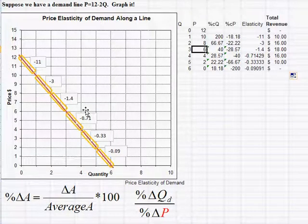A word of caution: you don't necessarily want to charge this price, because it won't make your profit the biggest — it only maximizes total revenue. In the next lecture we'll prove that this price corresponds to elasticity of -1 and also prove that it produces the maximum total revenue. See you next time.